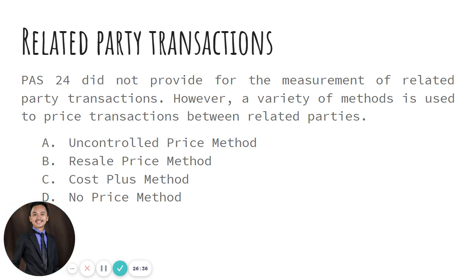Lastly, the no price method — literally no price is charged, as in the case of free provision of management services and the extension of free credit on a debt. Although it is a no-price transaction, it is still required to be disclosed as a related party disclosure. Because if they are a related party and under one legal entity that reports a single consolidated financial statement, all income and losses earned from another related party or subsidiary will be eliminated at the end of the accounting period.